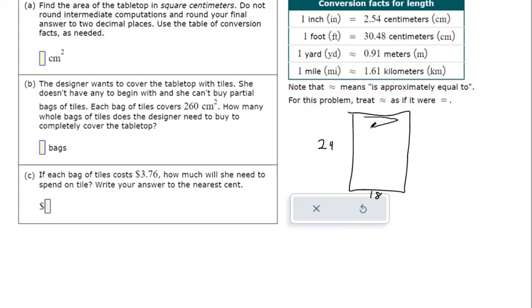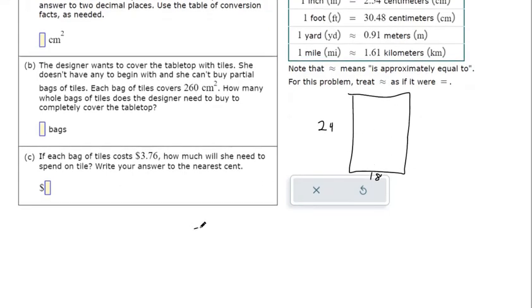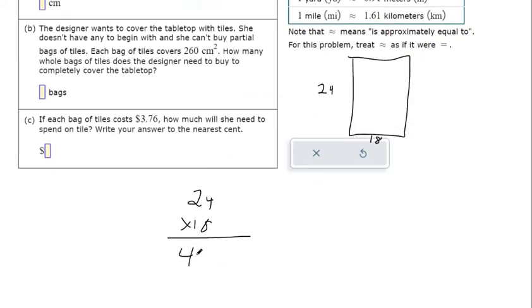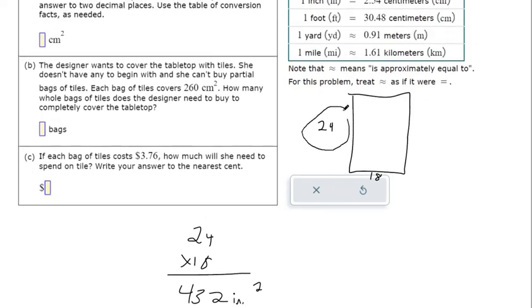Let's first find the area in square inches, then we can use our conversions. So 24 times 18 makes 432 square inches. That's squared because you get inches times inches, which makes inches squared.